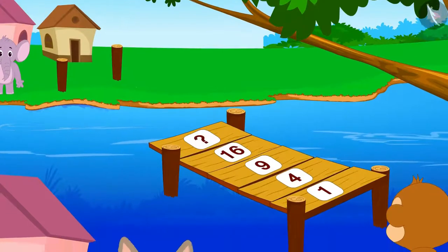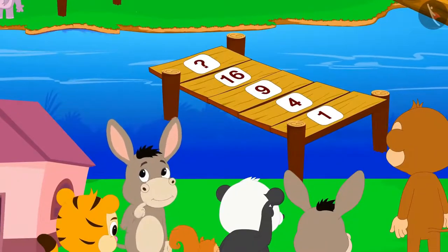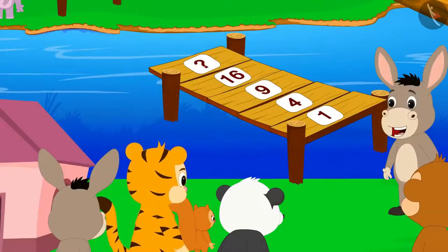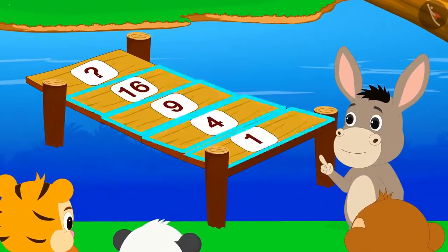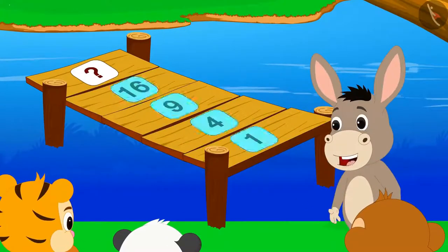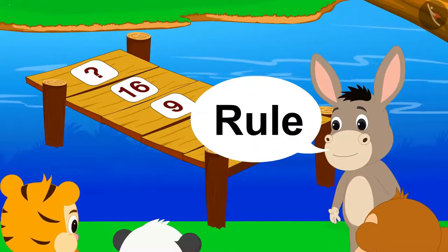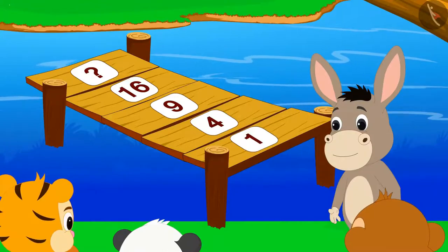All the villagers got absorbed in thinking about what could this mean. Look, there is a number written on every plank of this bridge. There will definitely be a rule between these numbers, Bola told the villagers.